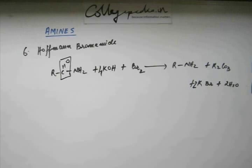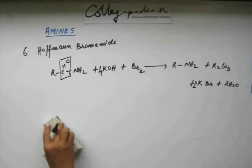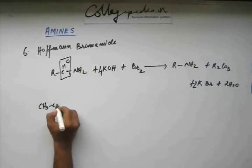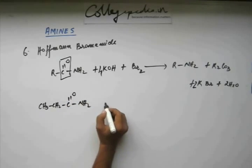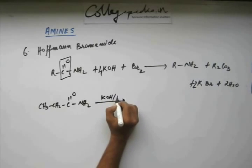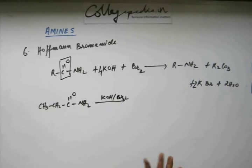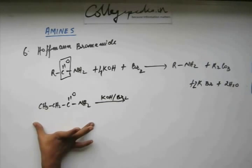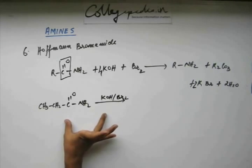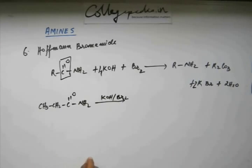Before moving into the mechanism, you should quickly learn how to write the final product. Suppose you add KOH and Br₂ — the first thing that should click in your mind is to identify the reaction from the reagents. If you are having an amide with the reagent KOH/Br₂, this becomes the Hoffmann Bromamide reaction, because Hoffmann Bromamide requires an amide substrate and KOH/Br₂ as reagents.